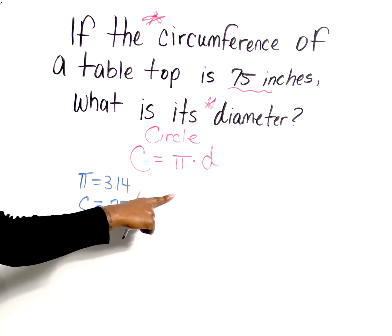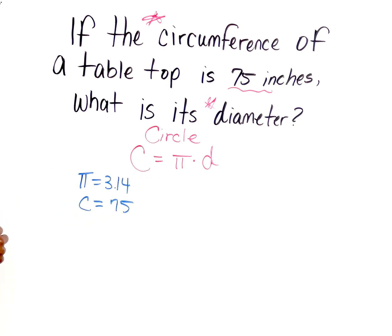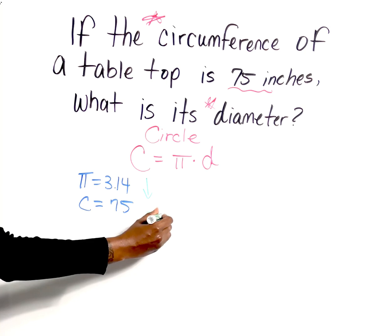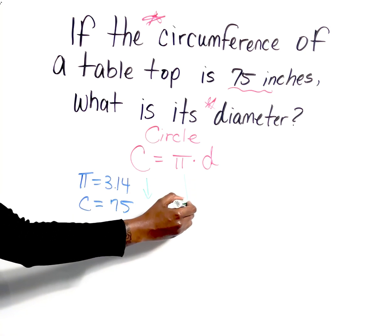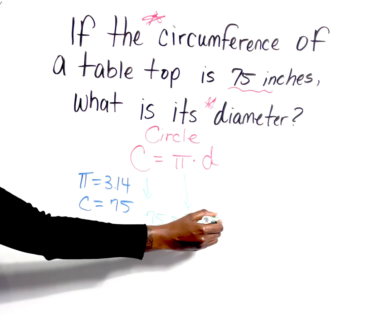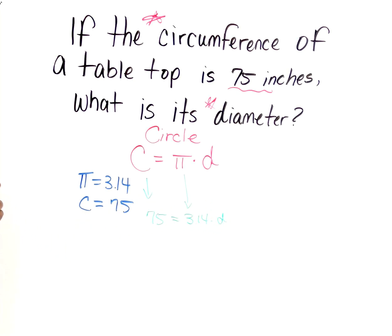So we're going to take the values that we're given, plug them into this equation, and solve for the diameter. So instead of C we're going to substitute in 75, instead of π we're going to substitute in 3.14.